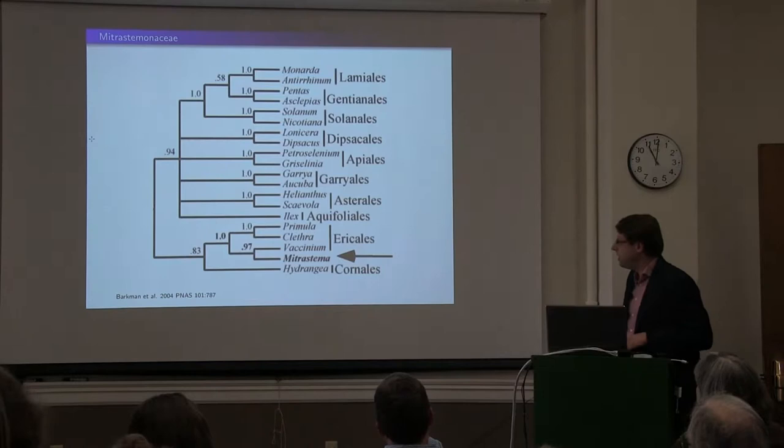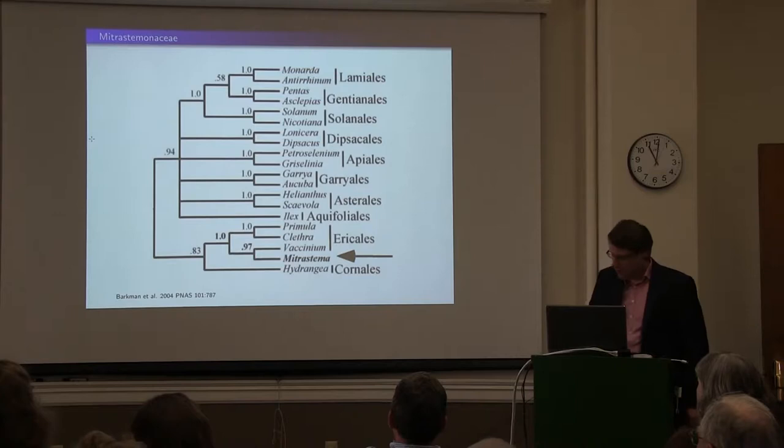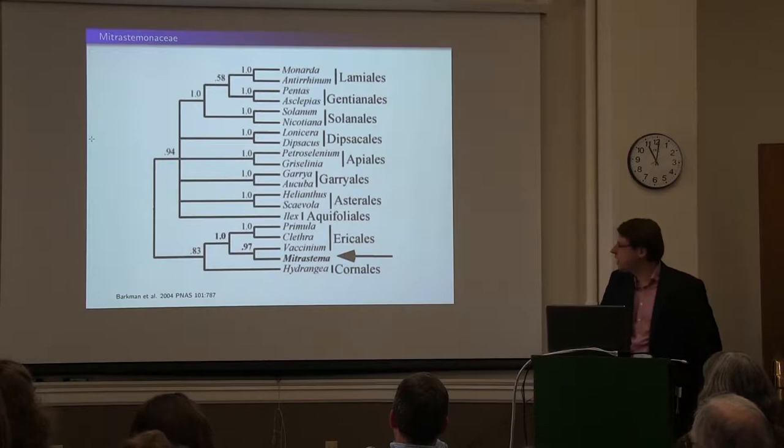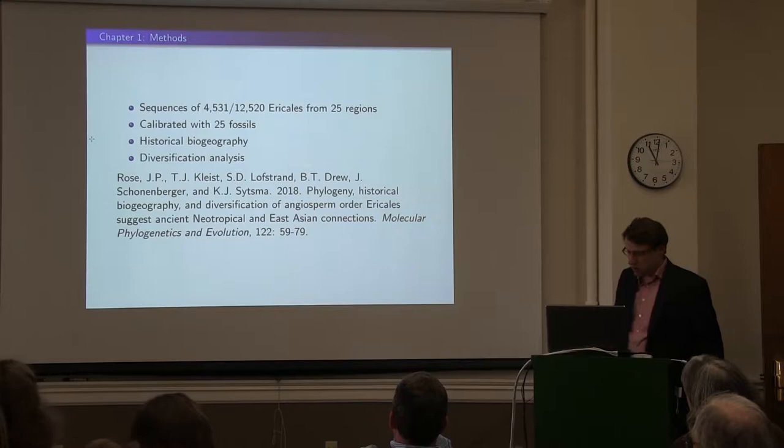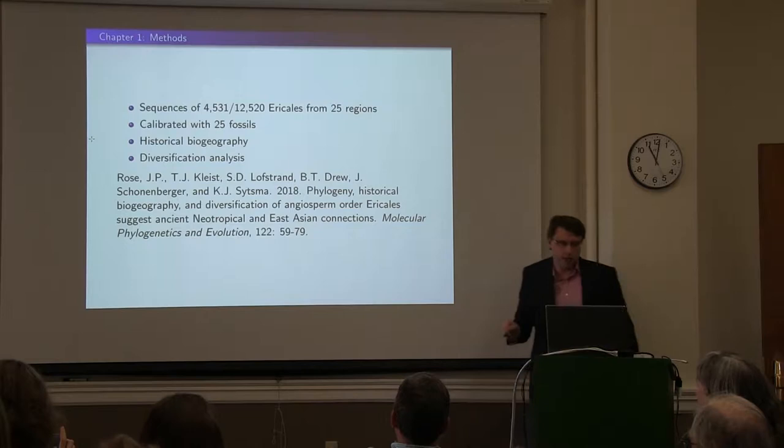We did know, as early as 2004, that Mitrastema was in Ericales — sister to blueberries — based on one mitochondrial marker. But there are only three Ericales in that tree, so it was unclear where Mitrastema actually fell. We now have sequences for about a third of the families, for 25 gene regions, calibrated with 25 fossils, to look at historical biogeography and diversification of the order. If you're more interested in this than what I'm talking about today, this was published earlier this year.